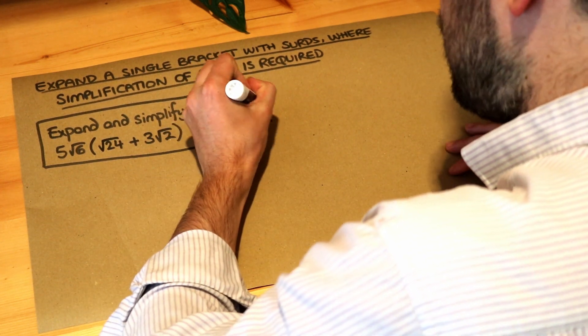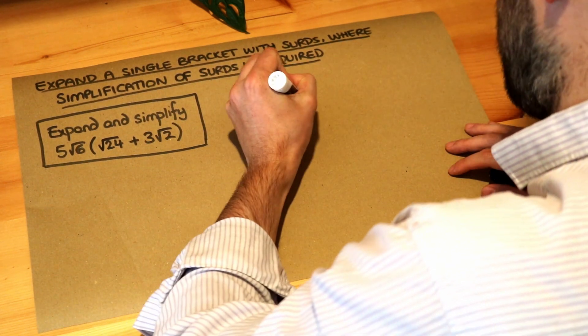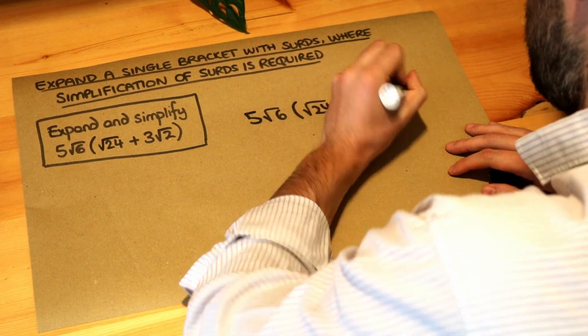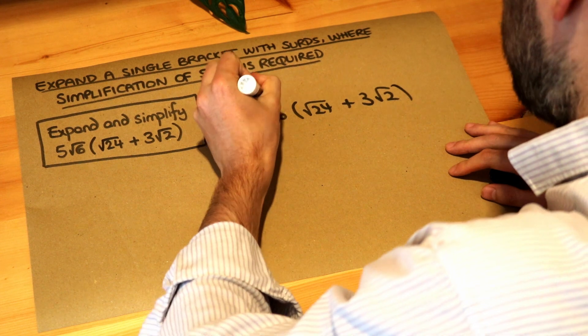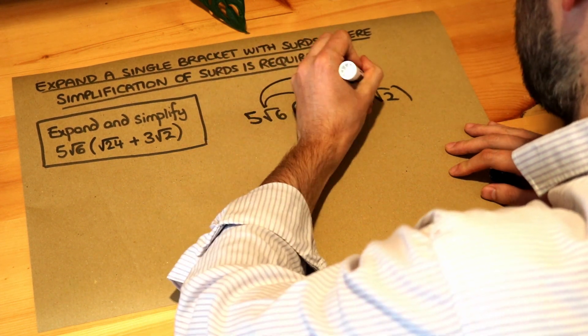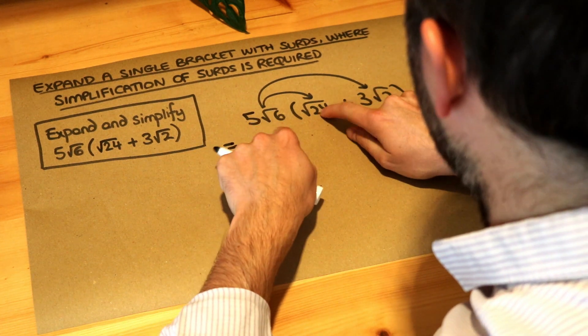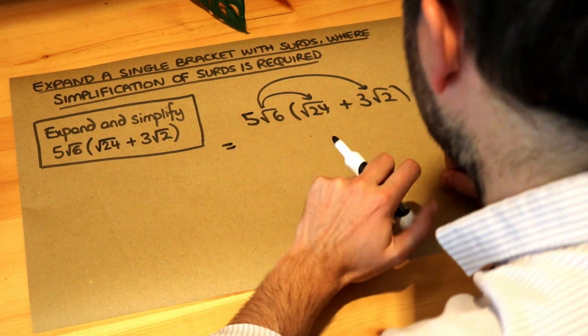We can just use the usual approach for multiplying out a single bracket. Remember that we do the thing in front of the bracket multiplied by each thing inside the bracket, and we can just use our knowledge of how we multiply surds together. Sometimes we have non-surdy things, so things without a square root.